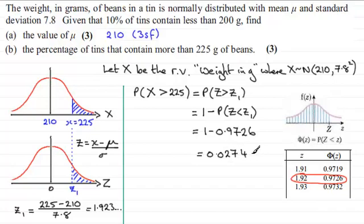But remember, we had to give this as a percentage, find the percentage of tins, that contain more than 225 grams. So as a percentage, this is equal to 2.7 percent to, say, two significant figures, 2SF.